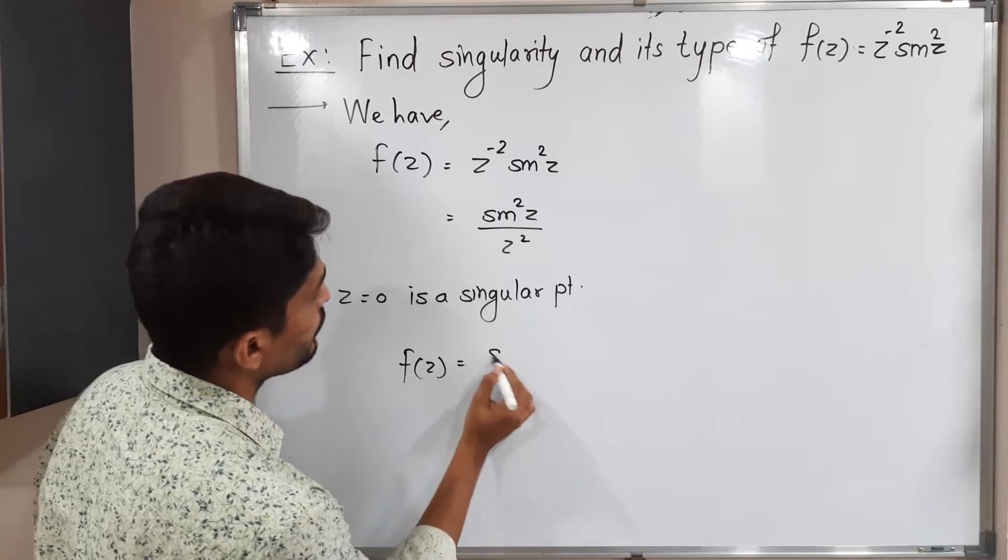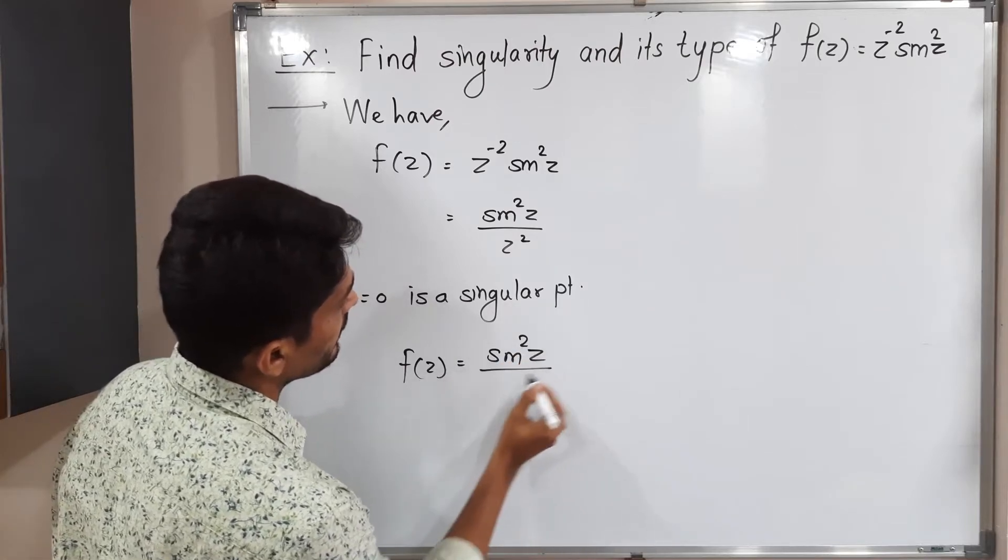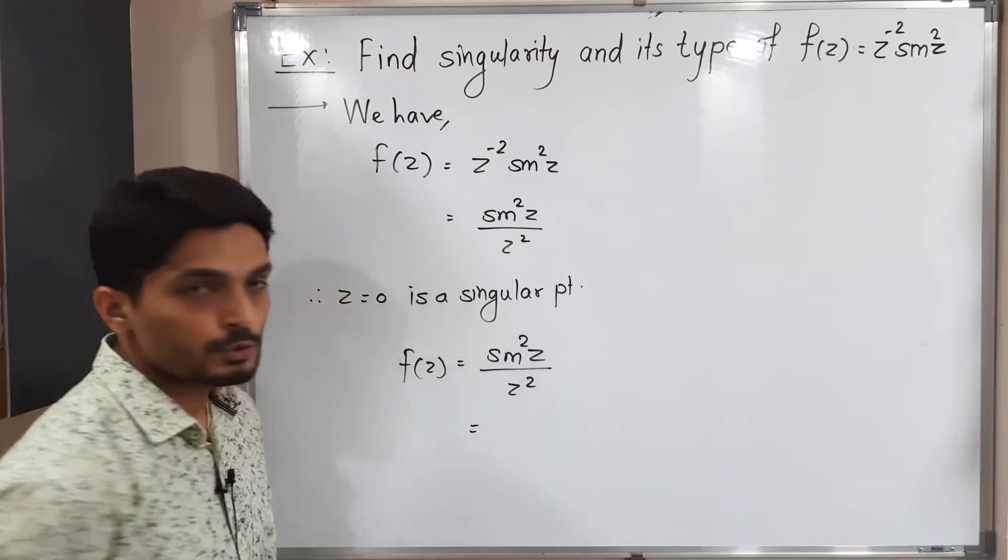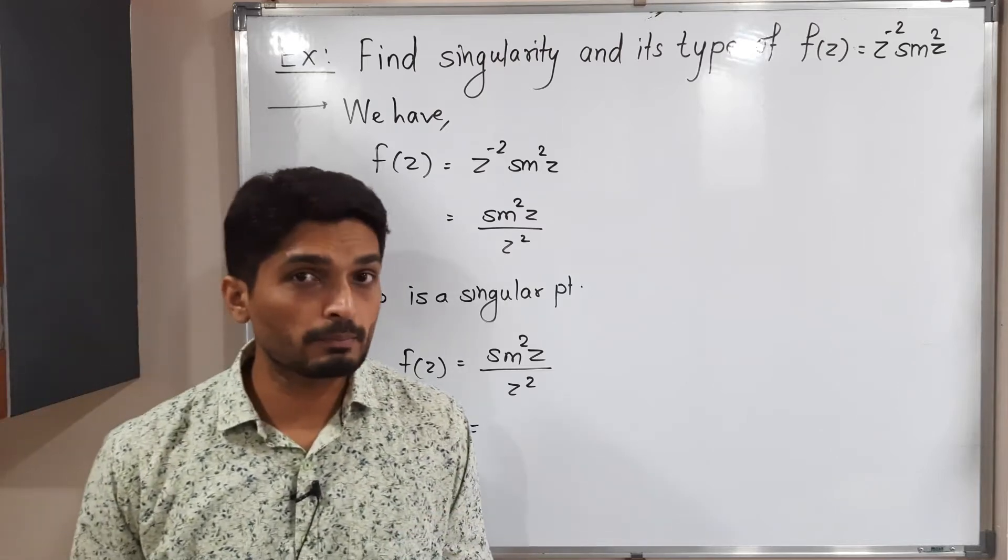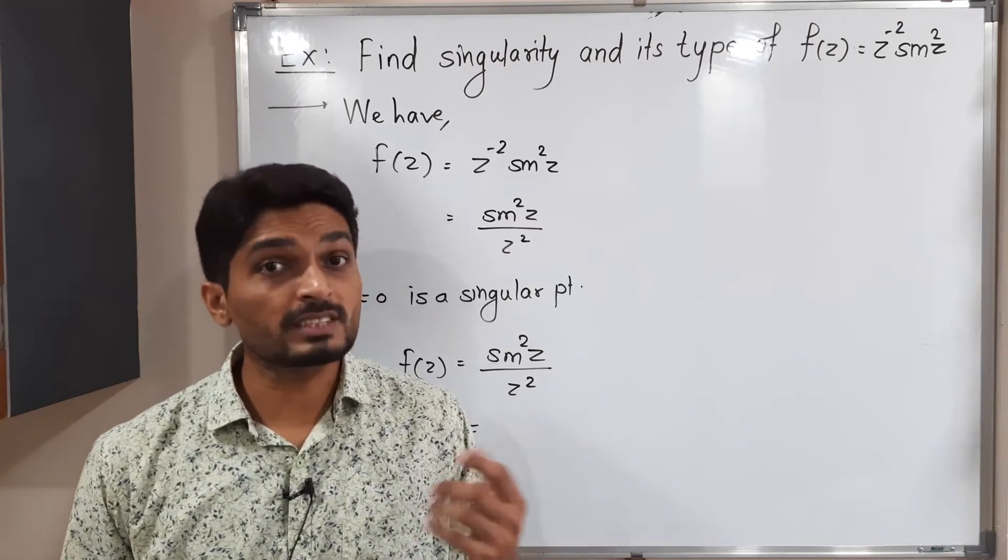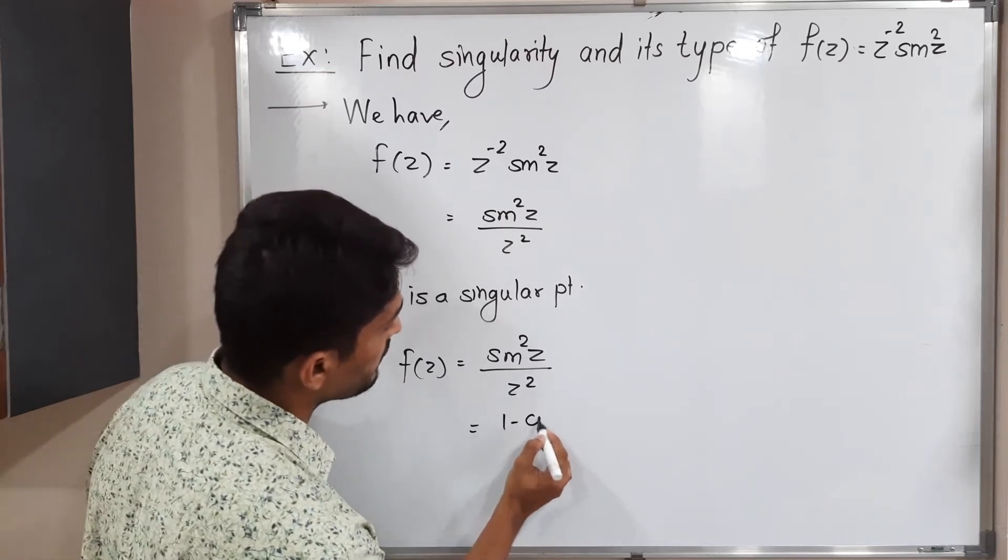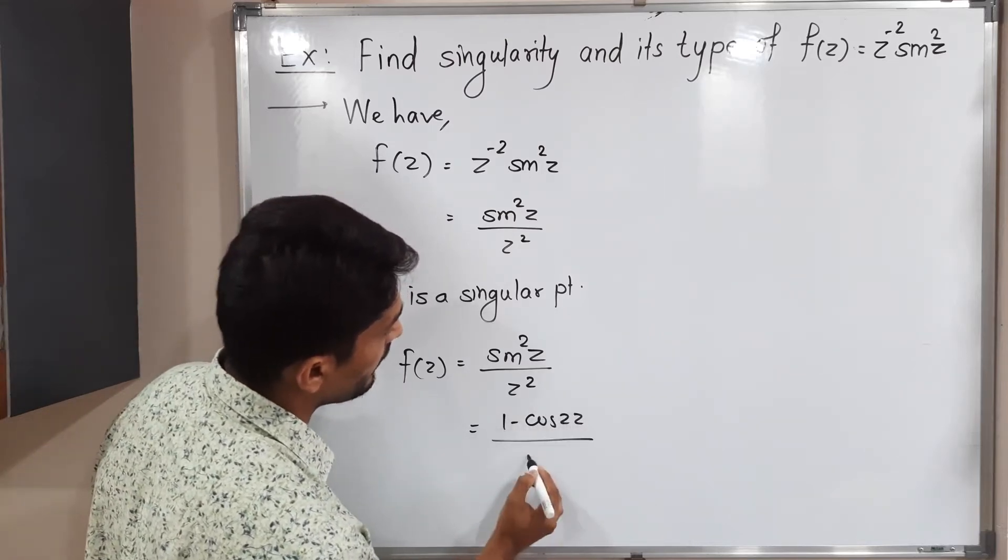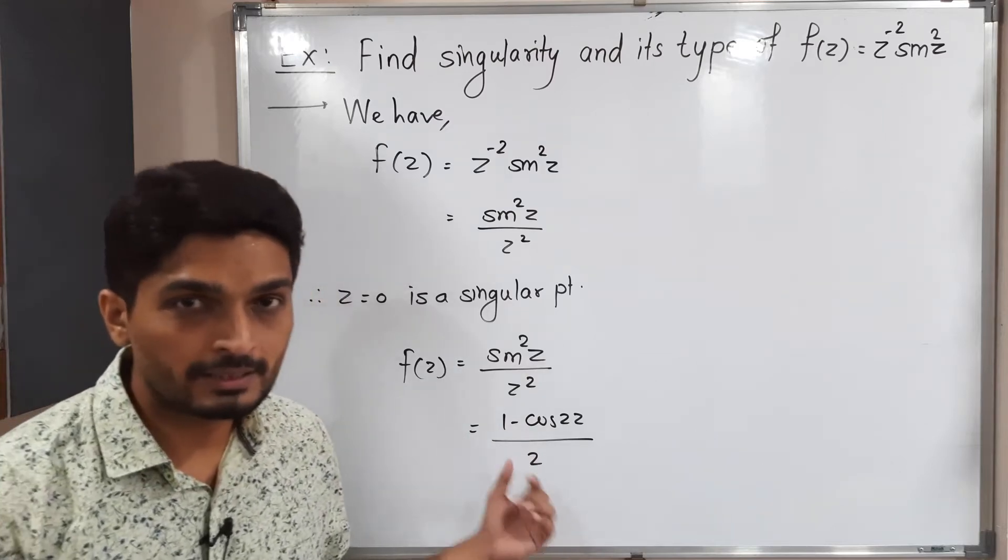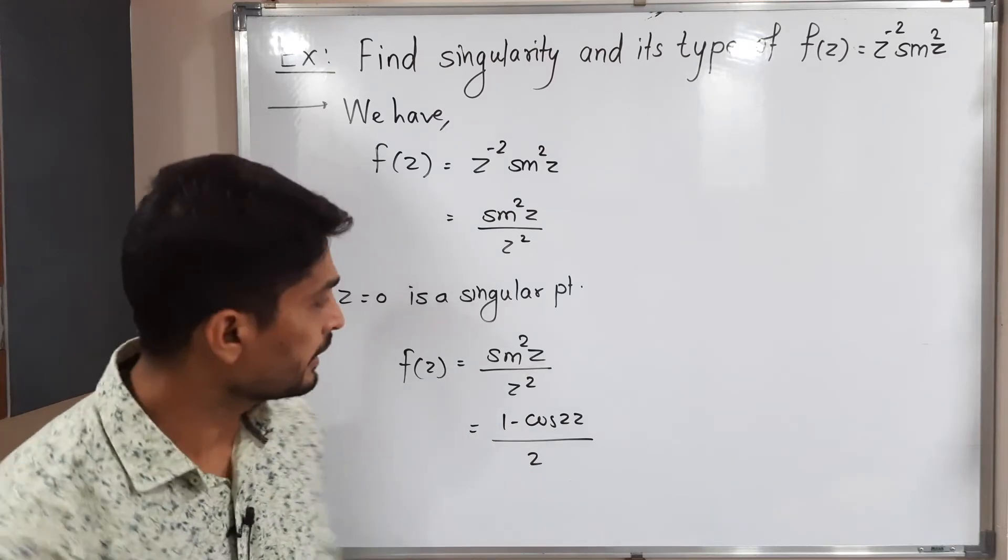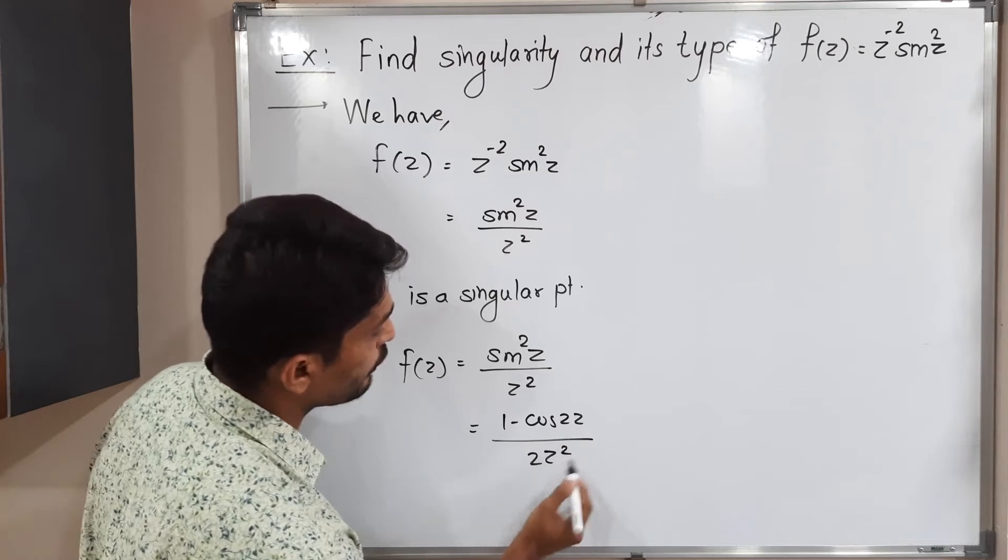f(z) equals sin²z divided by z². We are familiar with the series of sine, but we don't know the series of sin². So what will I do? I will express in terms of (1 - cos2z)/2. So I replace sin²z by this one. I use the formula of trigonometry and again z² we have in denominator.